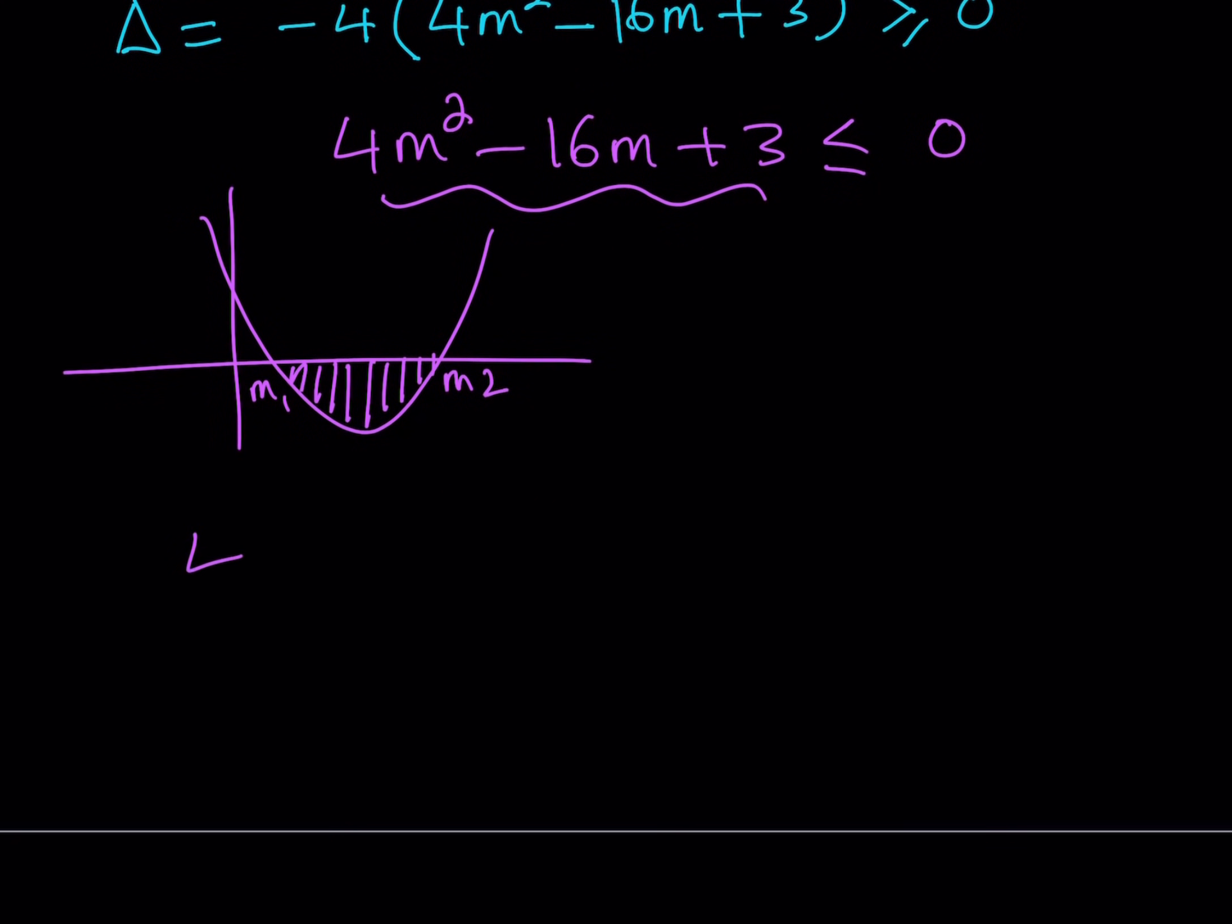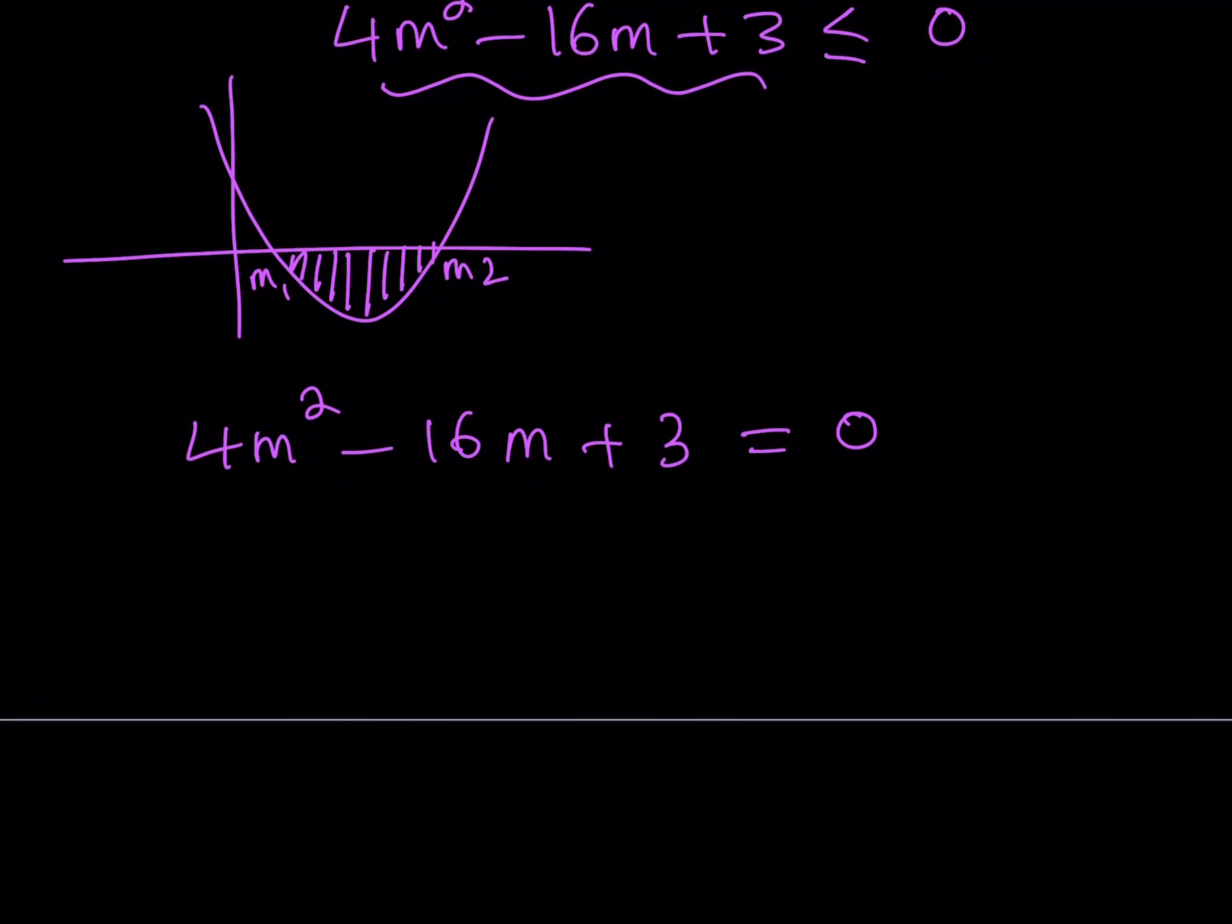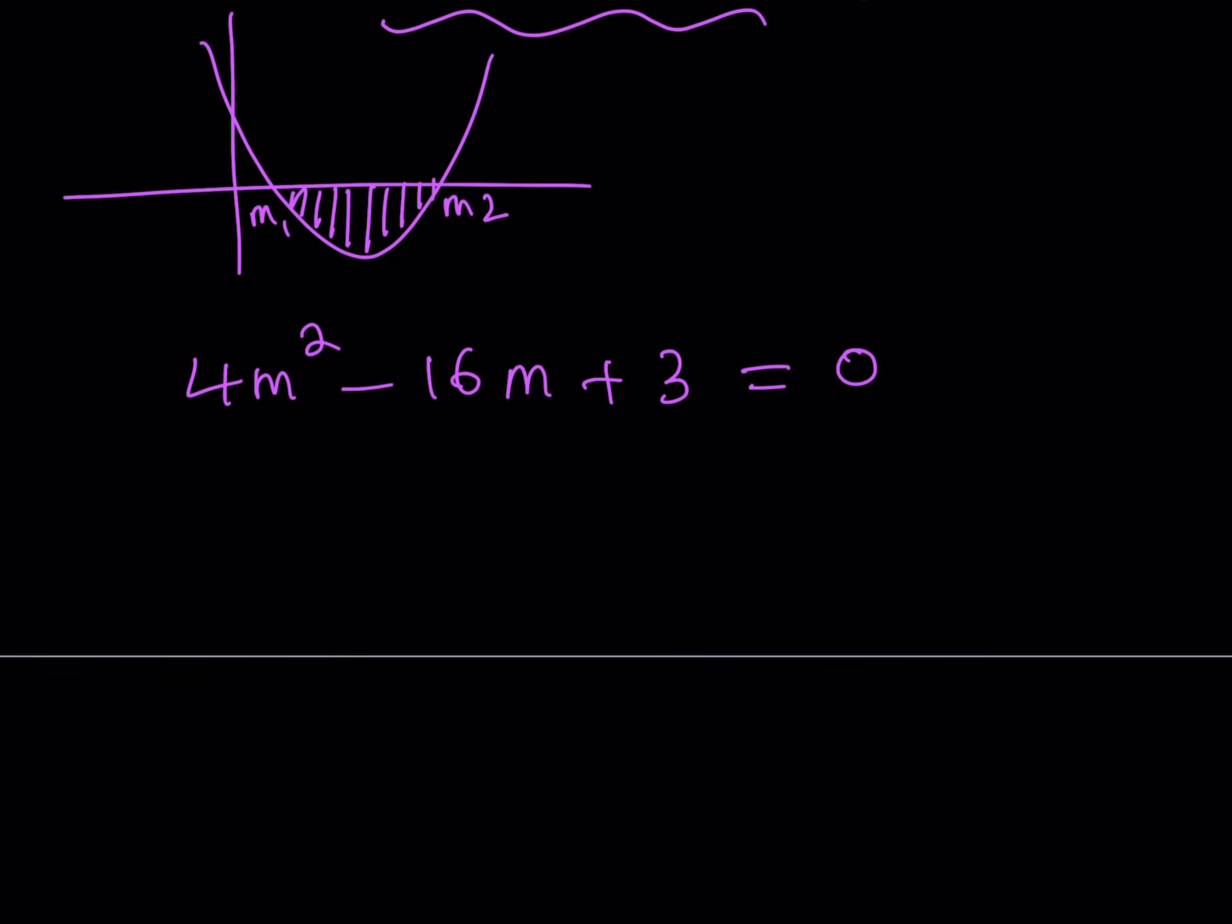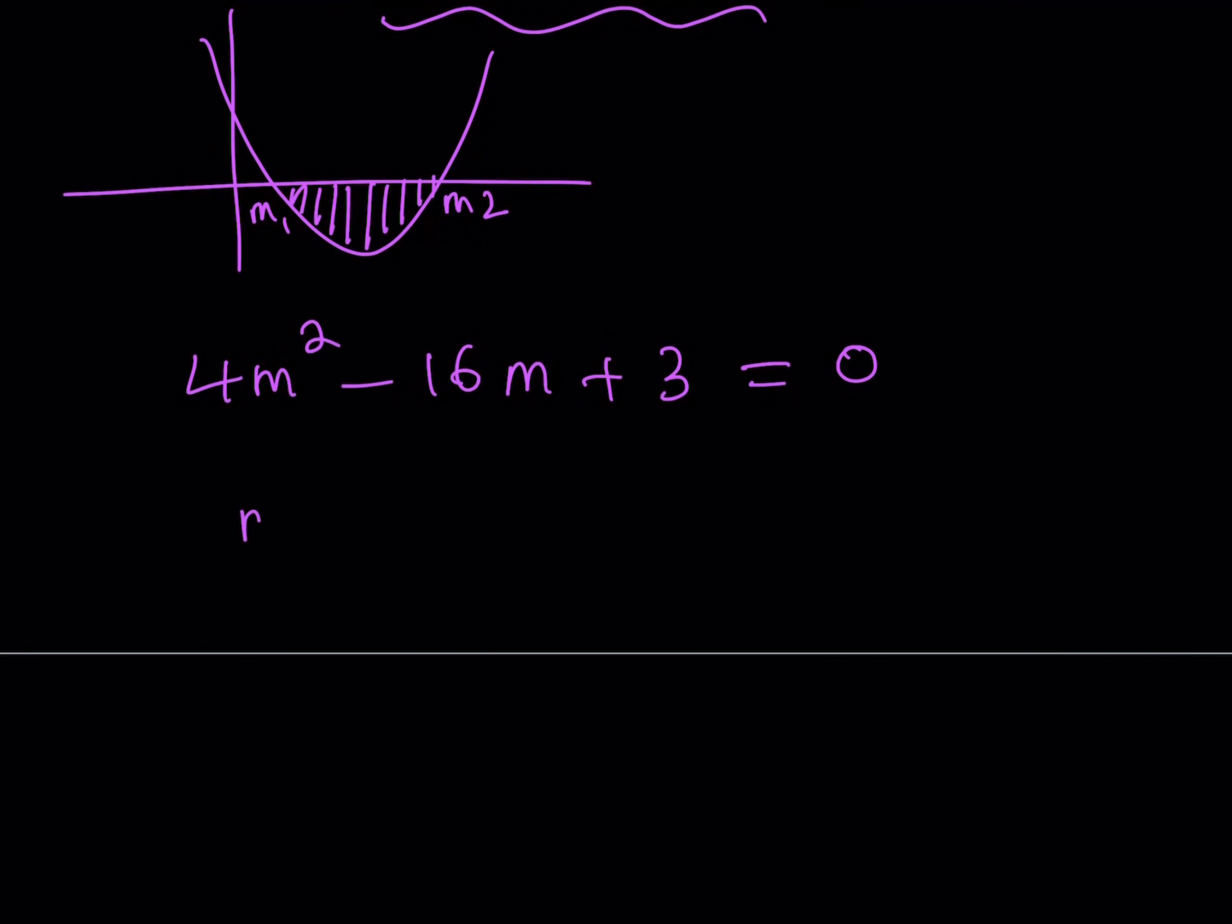So let's go ahead and find the roots first, m1 and m2. To find m1 and m2, we're going to solve this as a quadratic equation. So it's kind of like a quadratic within a quadratic. So to be able to solve this, I can use the quadratic formula. And the quadratic formula tells me m values are negative b plus minus the square root of b squared, which is 256 minus 4 times a times c.